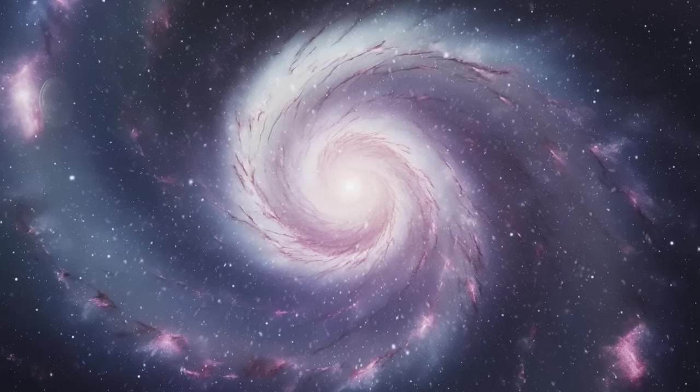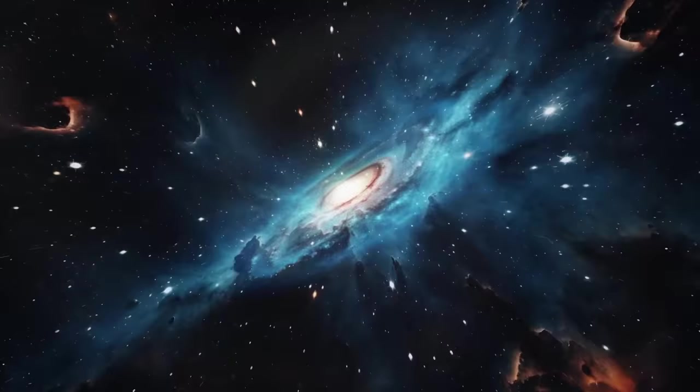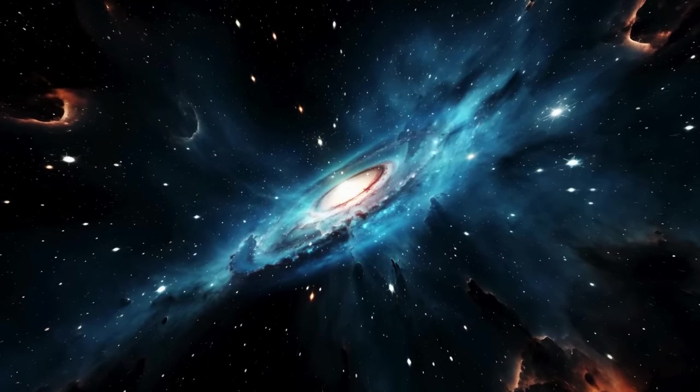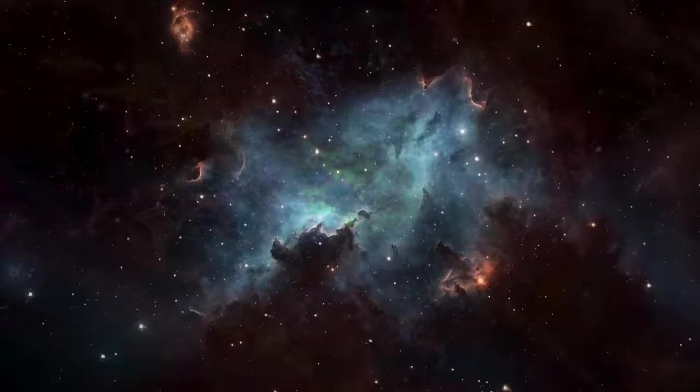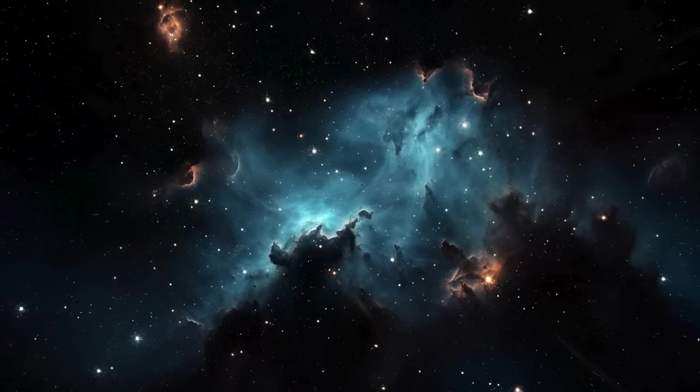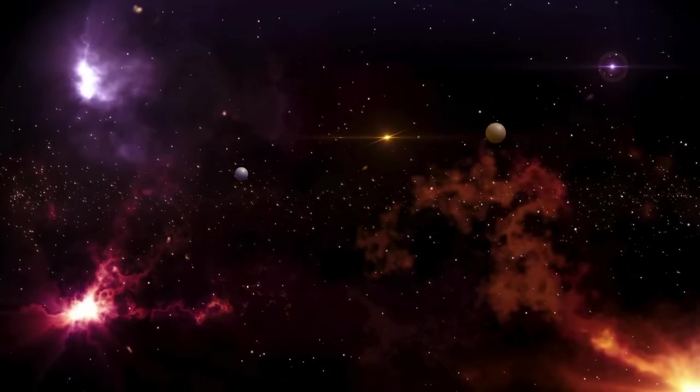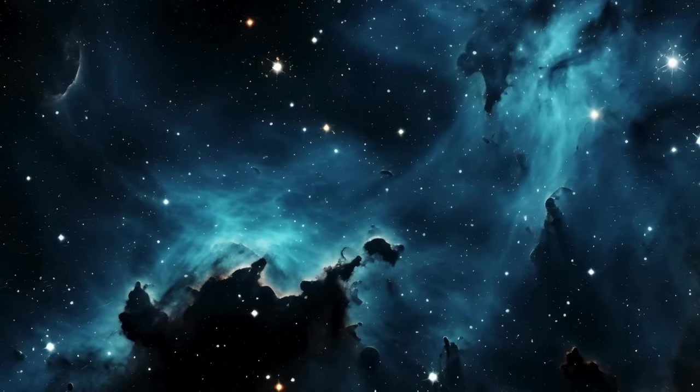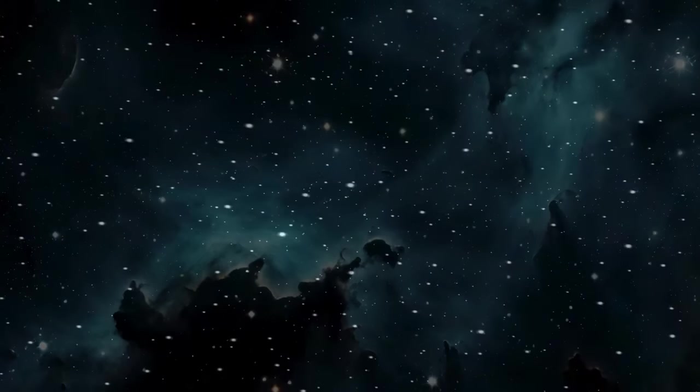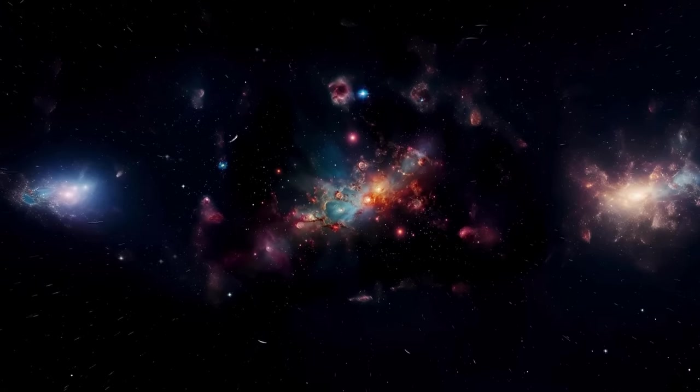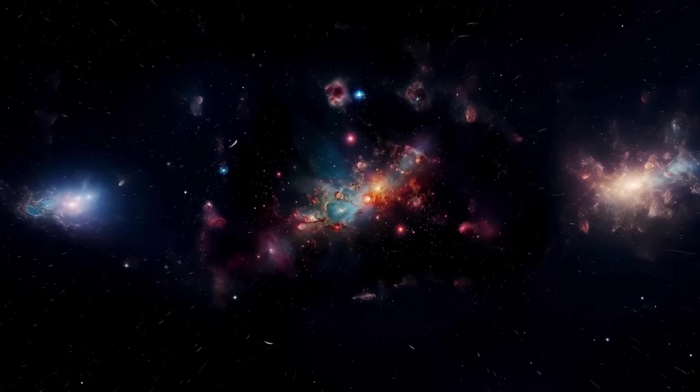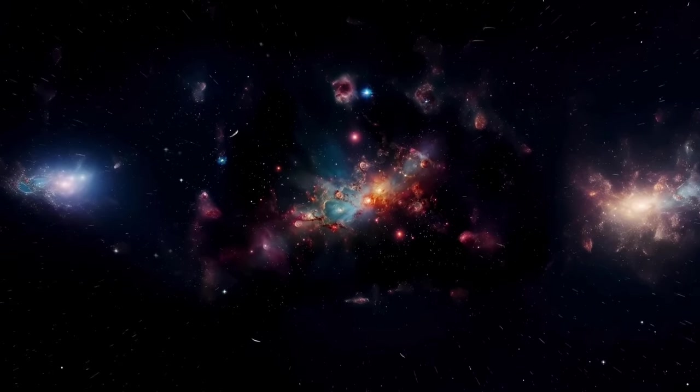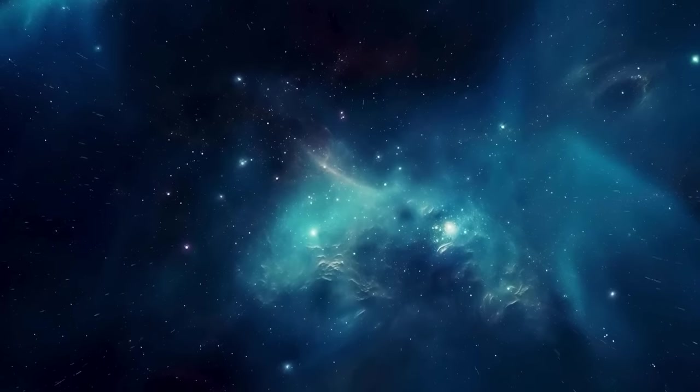So our observable universe is like a big bubble around us, going out as far as light could have traveled since the universe started. That's about 46 billion light years in any direction from us. Why is it bigger than 13.8 billion light years? It's because the universe has been expanding since the beginning, so things that emitted light 13.8 billion years ago are now further away. That gives us a bubble that's 93 billion light years across.